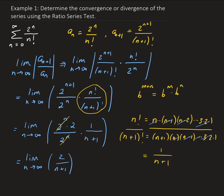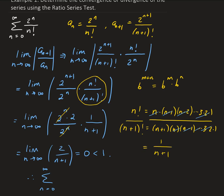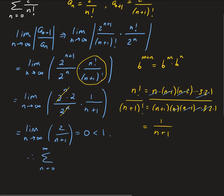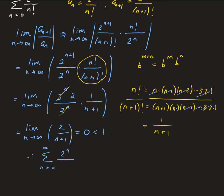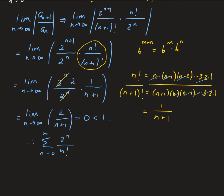As n increases, this expression approaches 0. So the limit is 0, which is less than 1. Therefore, this series converges — and not only converges, it converges absolutely, because we're taking the absolute value in the ratio test. Anytime you're using a ratio test and it converges, it's converging absolutely. So that is our solution.